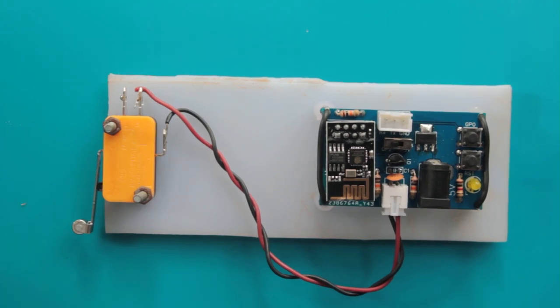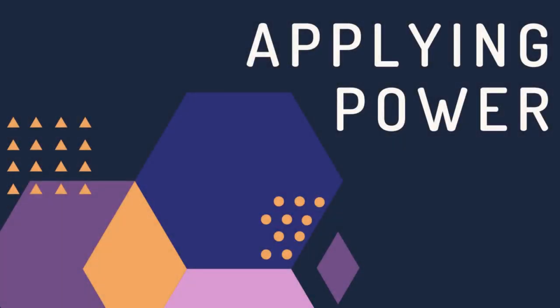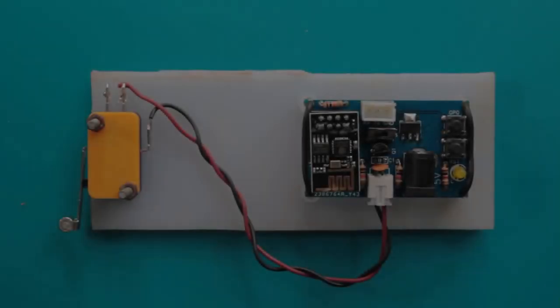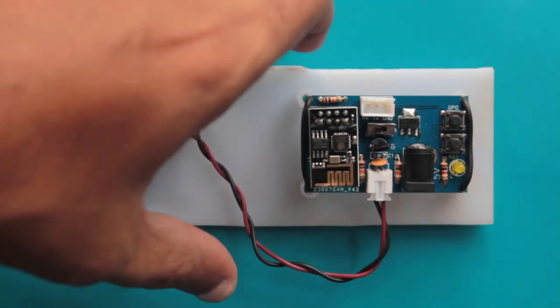Review the position of the ESP01 again, to ensure it is inserted correctly. Once reviewed, we can connect a source of power. The output voltage of the power source should not exceed 6 volts DC. Here I am connecting the source of power into the DC jack.